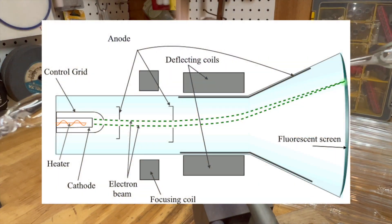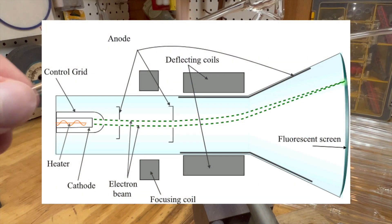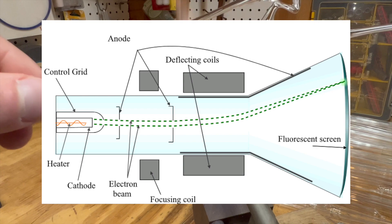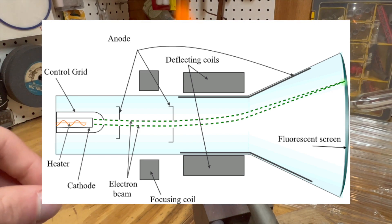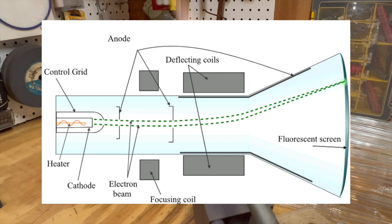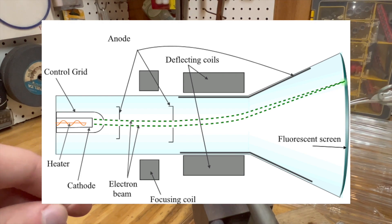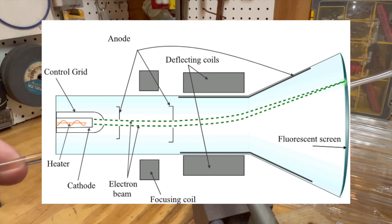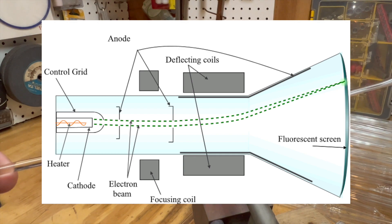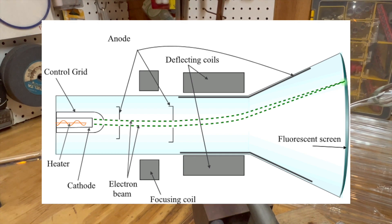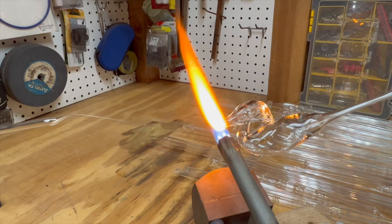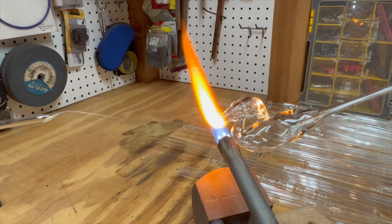Old-school CRT TVs make use of this principle. A high-voltage source creates electrons that are fired down towards the screen to create the image. The problem is the electrons come to a point on the screen, just creating a point. To get an image, these electrons need to be moved — this is where the magnets come in. By using electromagnets, the electrons can be controlled and aimed. This same effect can be applied to beta particles.